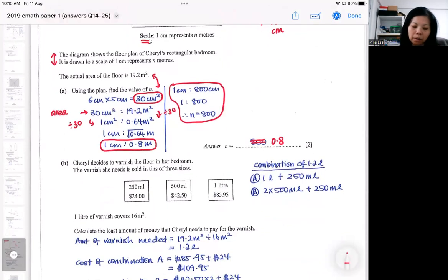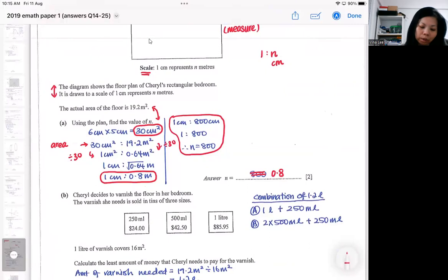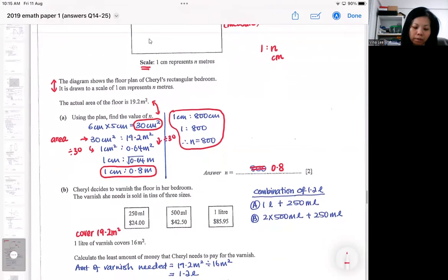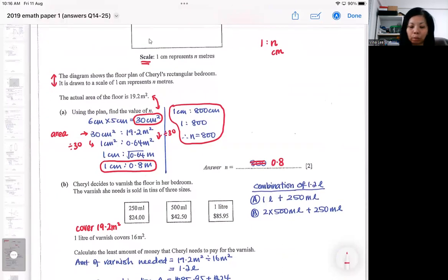For the second part, you can do the second part if let's say you couldn't do the first part, because the question says that she wants to varnish the floor in her bedroom. Make sure she wants to cover 19.2 meters square. So you make sure that you know that you need to cover 19.2 meters square. So how much varnish do you need? First of all, you need to decide how much first that would be sufficient for 19.2 meters square.